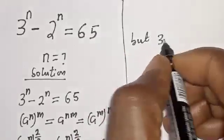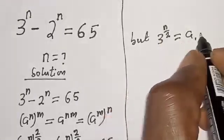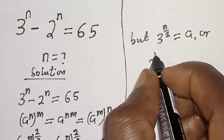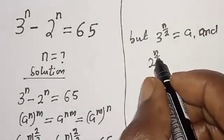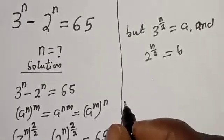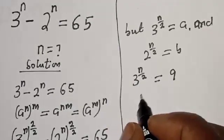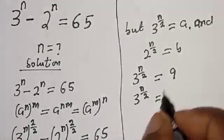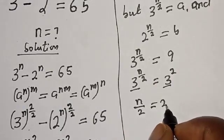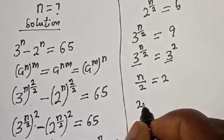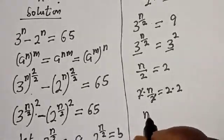Recall that 3 raised to power n over 2 equals a, which is 9. Since 9 is 3 squared, we have 3 raised to power n/2 equals 3 raised to power 2. Using the same base rule, n over 2 equals 2. Multiplying both sides by 2 gives n equals 4.